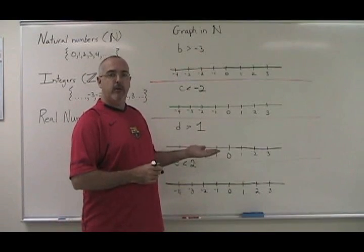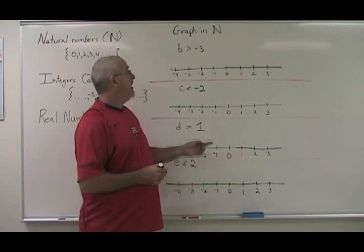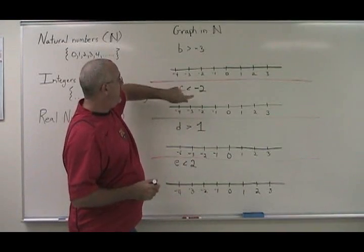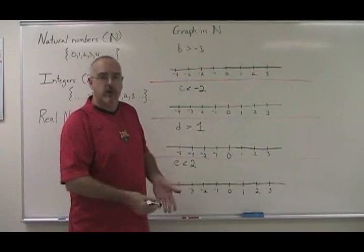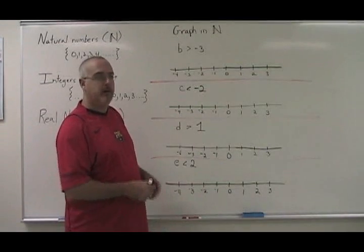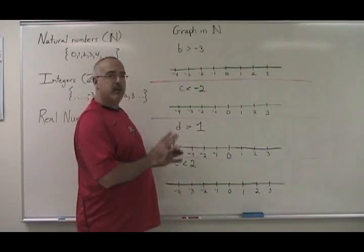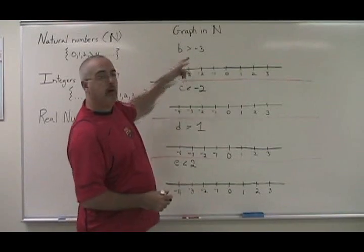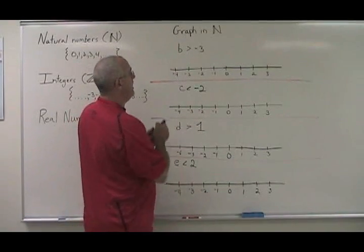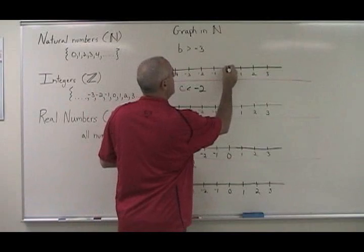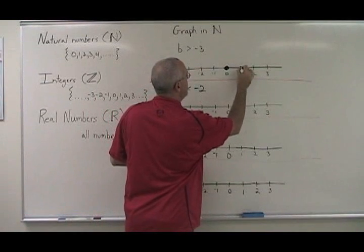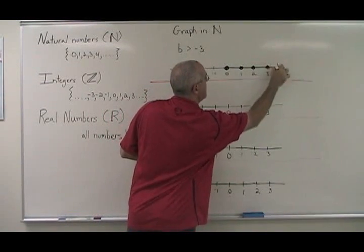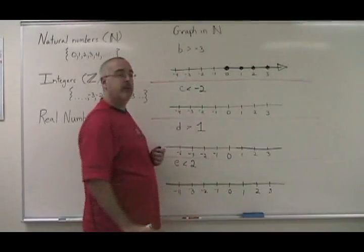Here are four very similar examples, except in this case I've used greater than and less than — there is no 'or equal to' in these equations. It changes things, but just a little bit. B greater than negative three: all natural numbers are greater than negative three. So I have zero, one, two, three, and I continue on forever in the positive direction.